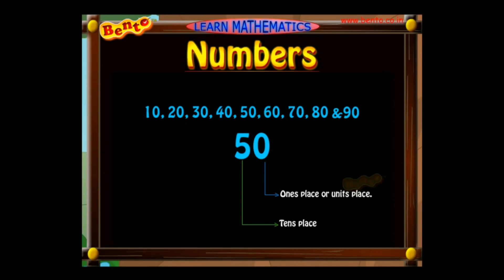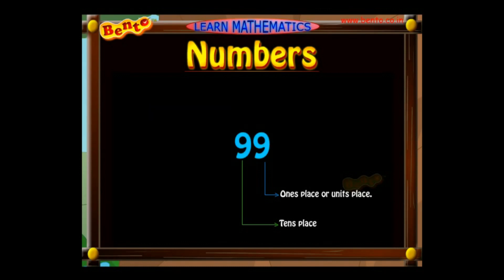The number 50 has five in its tens place and zero in its units place. It tells us there are five tens in the number 50 and no value in its units place. As it has only five tens, it is read as 50. The number 99 has nine tens and nine ones present in it — it has a 90 and a 9 in it, so it is read as 99.